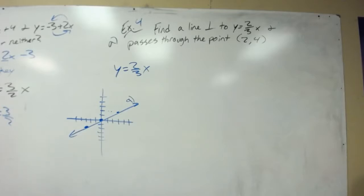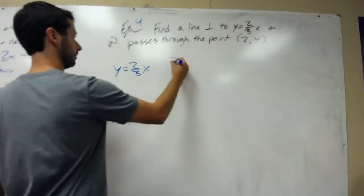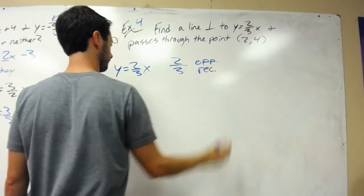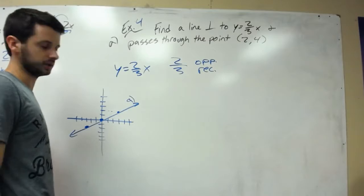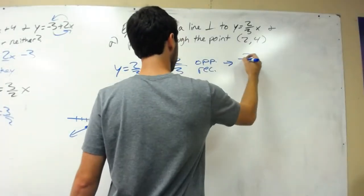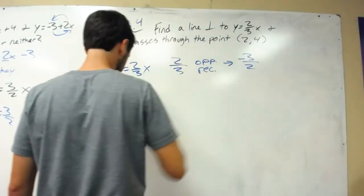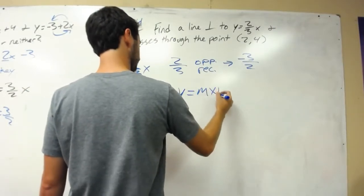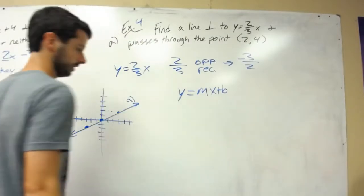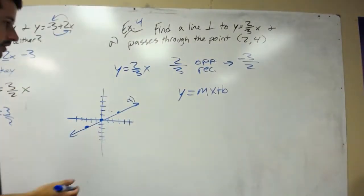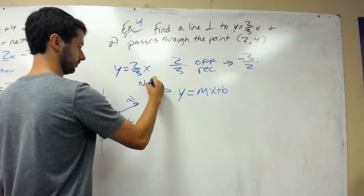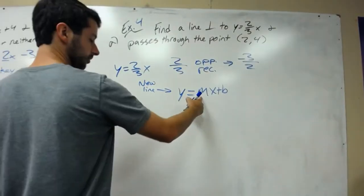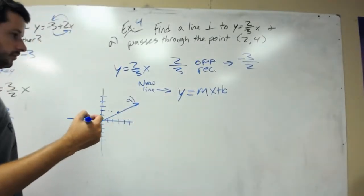We need to find a line perpendicular to that. Perpendicular is opposite reciprocal. Opposite reciprocal of 2 thirds is negative 3 over 2. Now we have a new equation y equals mx plus b, and we're trying to fill in the blanks. This is our new line, our new linear equation. We already know m is negative 3 halves.